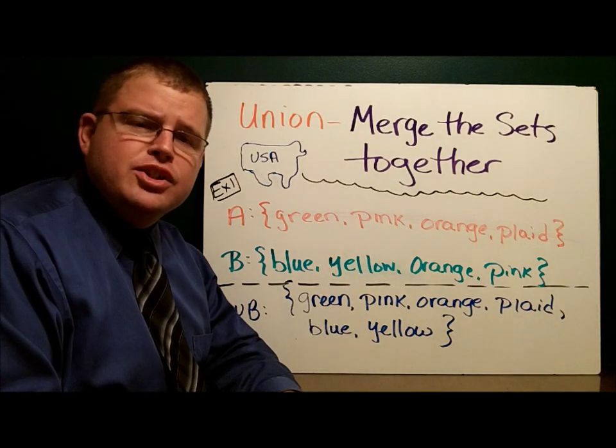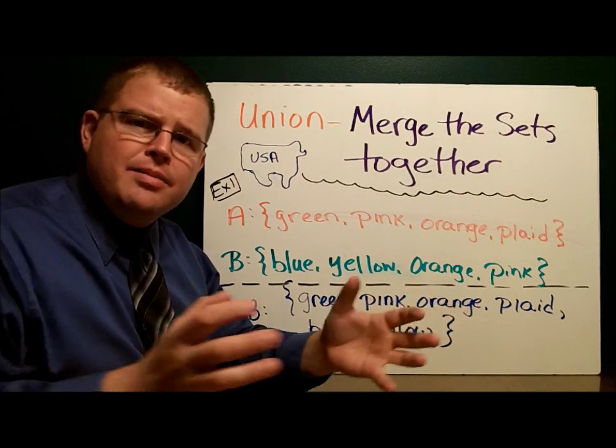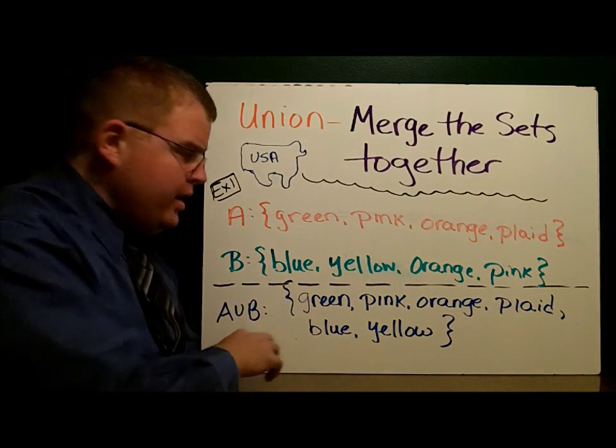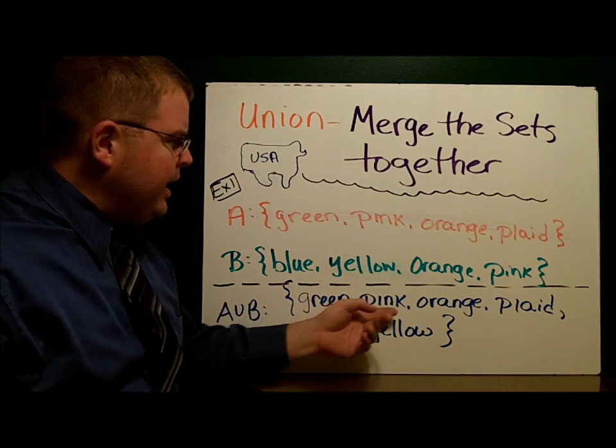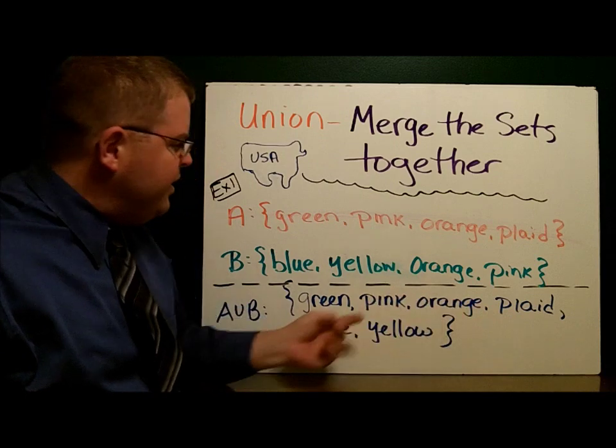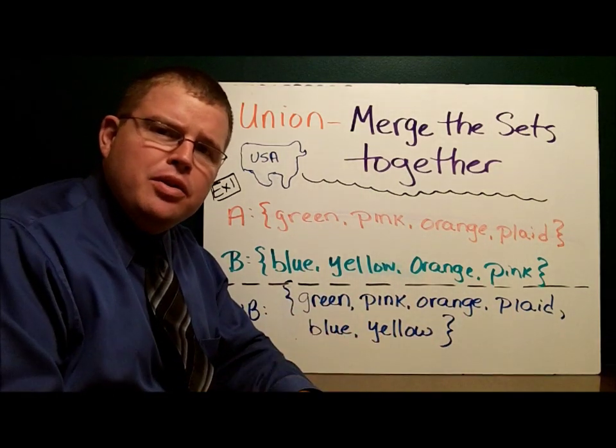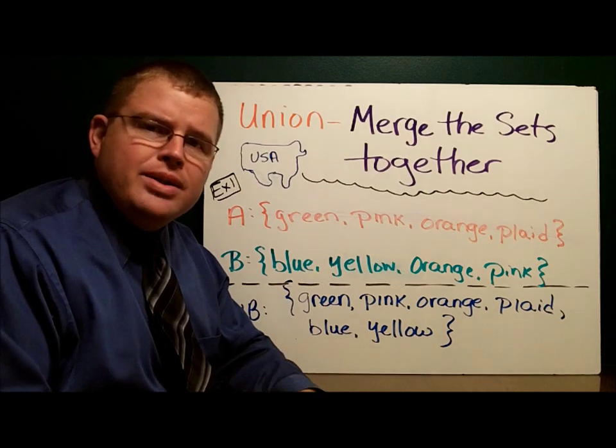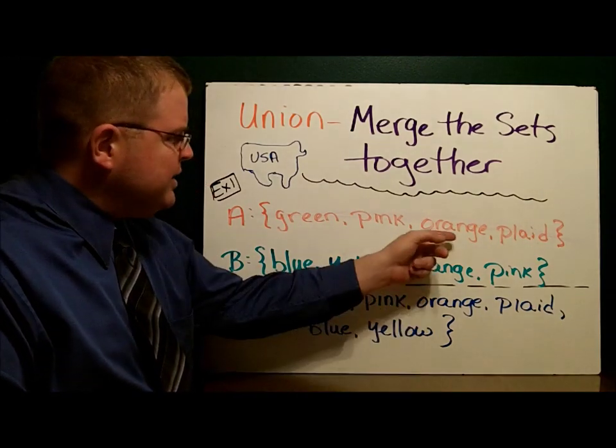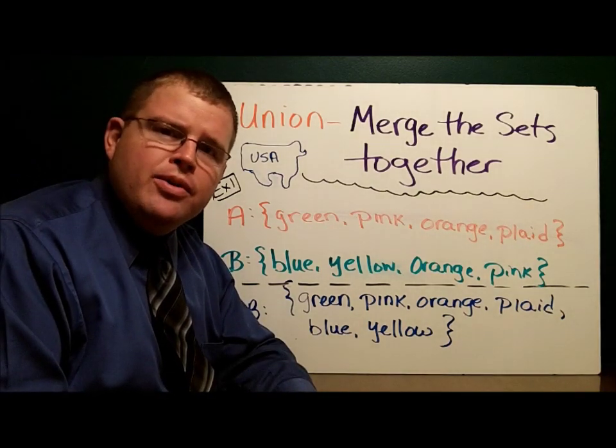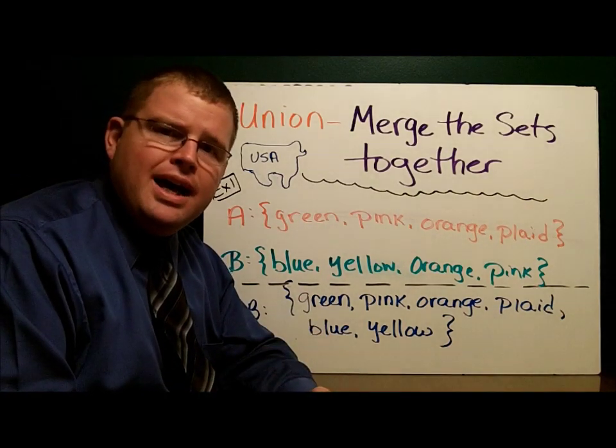The union of those two sets is all of those elements combined into one. A union B would give us green, pink, orange, plaid, blue, and yellow. Notice that some items were duplicates. There was an orange in A and an orange in B. We did not list the same element more than once.